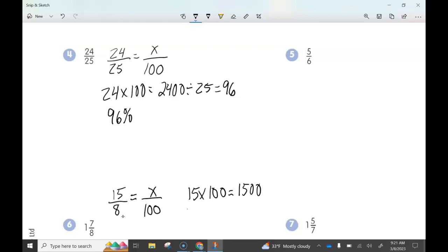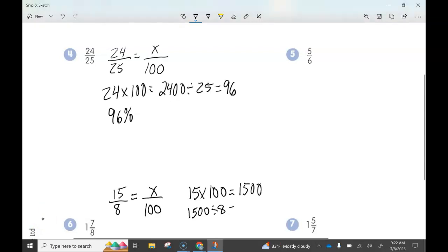Now we take the 1,500, we divide it by 8, and you can see that's going to give us 187.5%, or you can even write it as 187 and 1/2%.